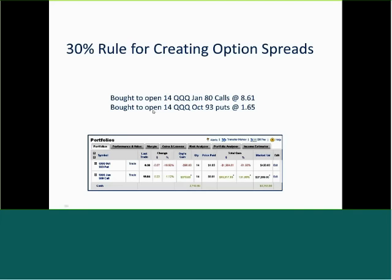We bought 14 of the QQQ January 80 calls at 861. We had a profit in that, so we went ahead and bought 14 of the QQQ 93 strike puts, and we paid 165 for the puts. So I had a profit in the call and bought a put option to protect those profits.